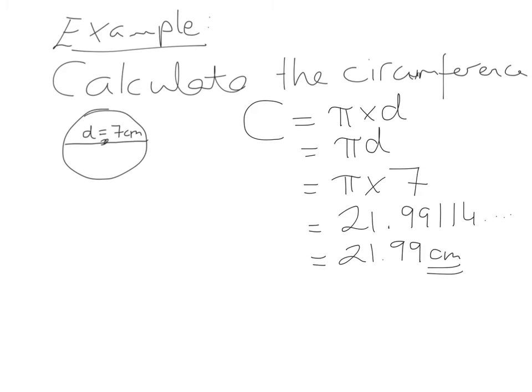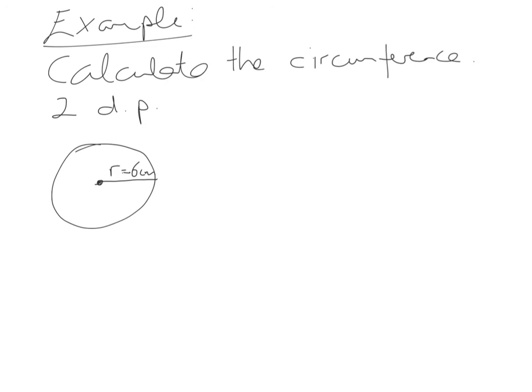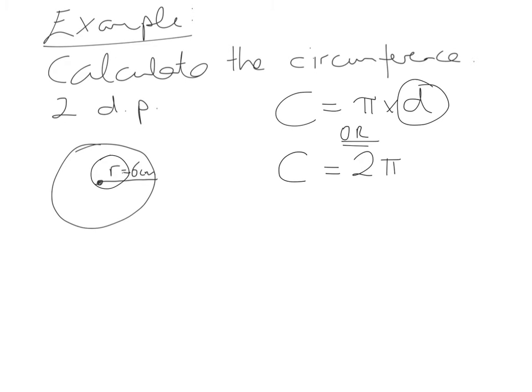In this next example we're asked to calculate the circumference, but this time we're given that the radius equals 6 centimetres. The common mistake is to just multiply 6 by pi, but remember the formula uses D, not R. There is another version: C = 2πR, which means 2 multiplied by pi multiplied by the radius. The 2 is there because the radius is half the length of the diameter. You don't need to learn both — they mean the same thing. Since the radius is 6, the diameter must be 12, so C = π × 12. Rounded to two decimal places, that gives 37.70 centimetres.